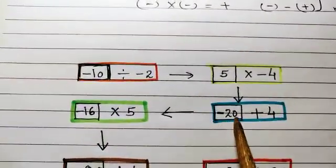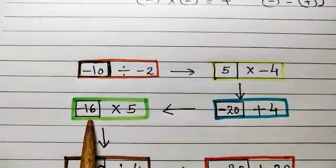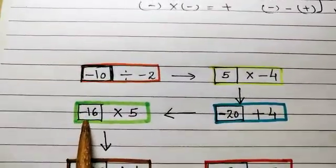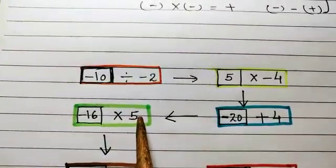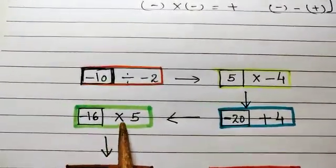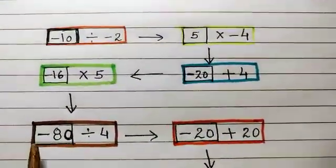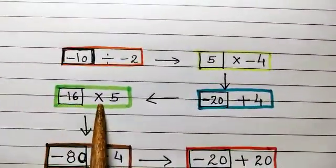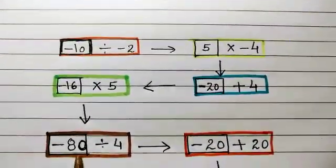Hence, minus 20 plus 4 will be minus 16 or negative 16. When this negative 16 is multiplied by positive 5, that is, a negative integer multiplied with positive 5, you are getting a negative integer. That is, minus 16 into 5 is giving you minus 80.